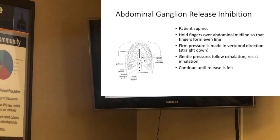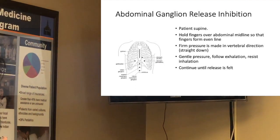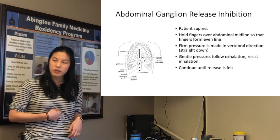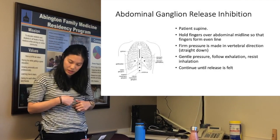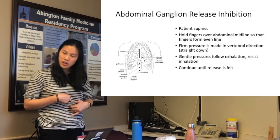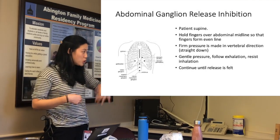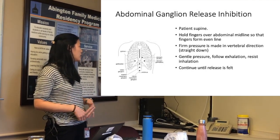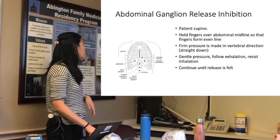The last optional technique I referenced earlier is the abdominal ganglion release. Find the xiphoid process and the belly button — one-third of the way down is the first landmark, halfway is the middle, and another third down is the last ganglion location. You push downward applying significant pressure while the patient breathes in and out. It can be a bit painful, but it's another technique to try.